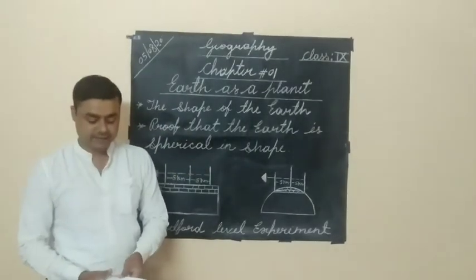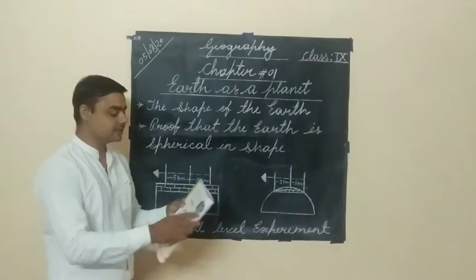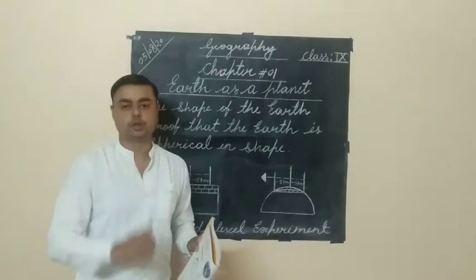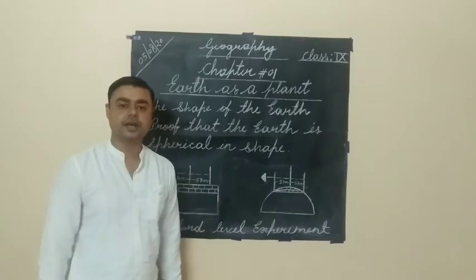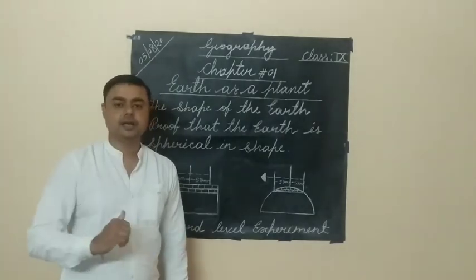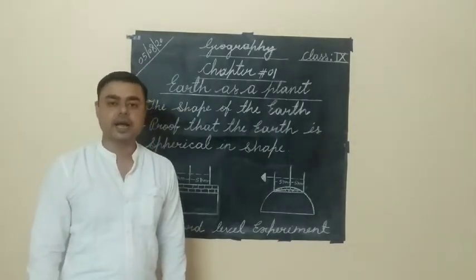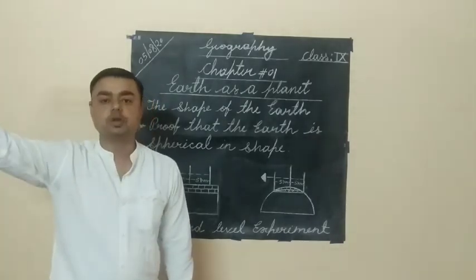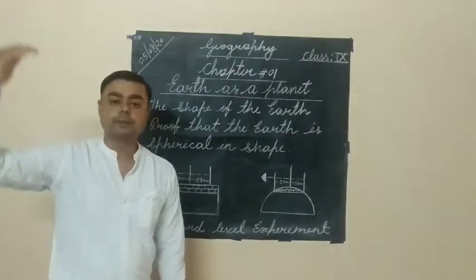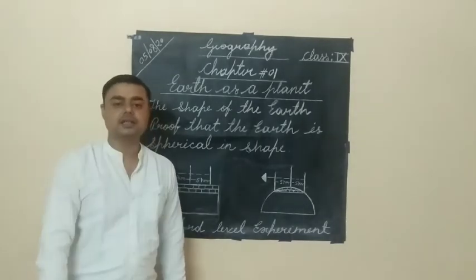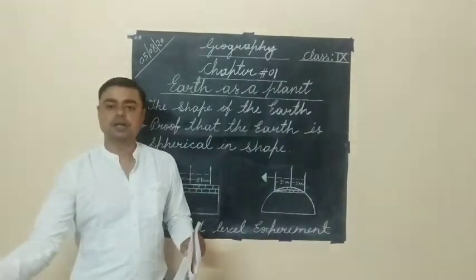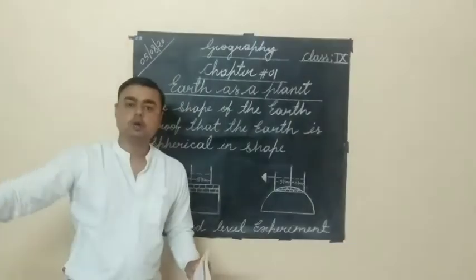The next experiment given in this chapter is the sighting of the ships. When you are standing on a seashore and a ship comes in, you first see the mast — the flag or the top structure — before you see the rest of the ship. This proves that the Earth's shape is spherical.